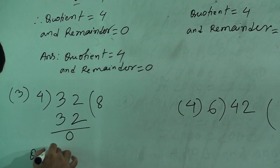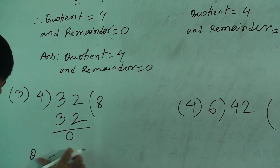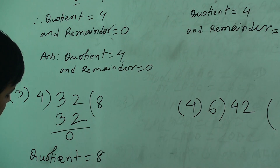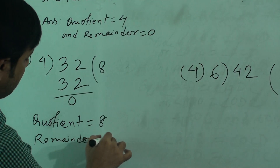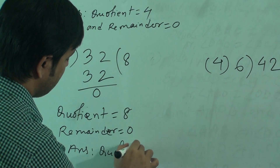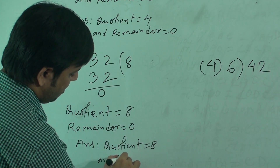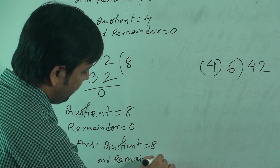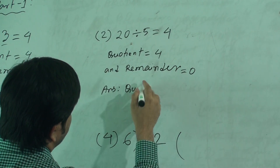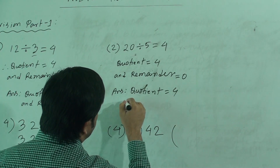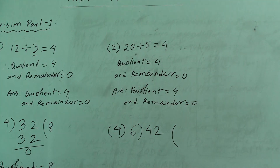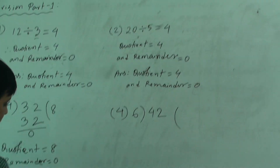So, we can write quotient equal to 8 and remainder equal to 0. We can write the answer: quotient 8 and remainder 0. Also, for question 2: quotient equal to 4 and remainder equal to 0. So, quotient 8, remainder 0.